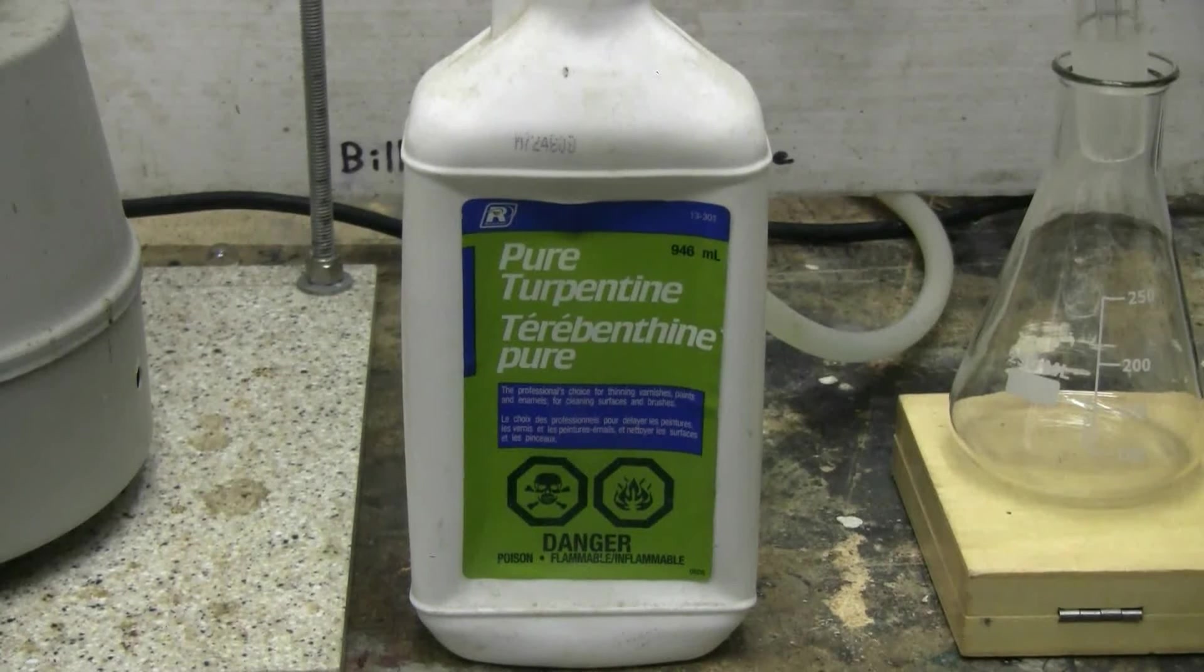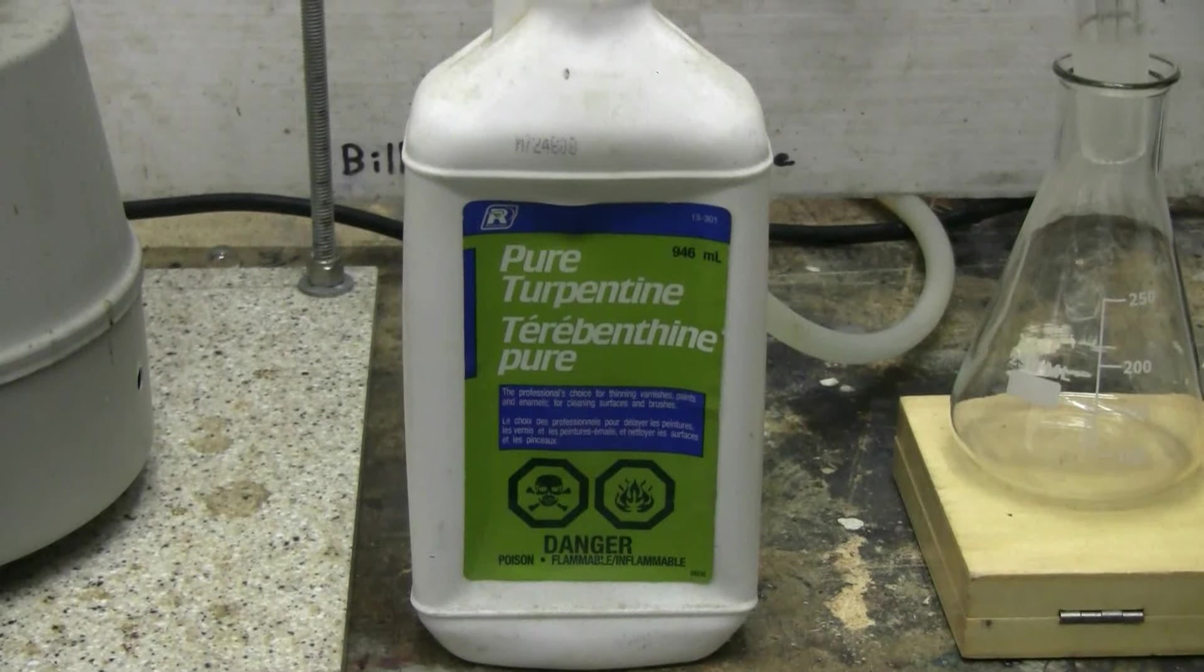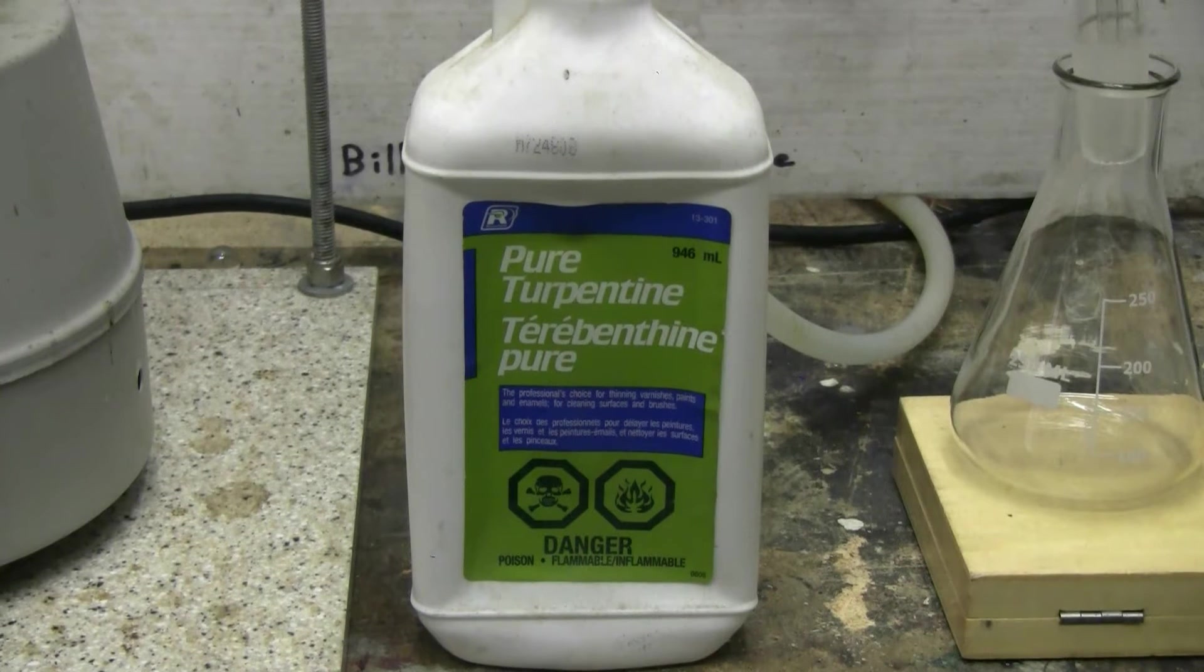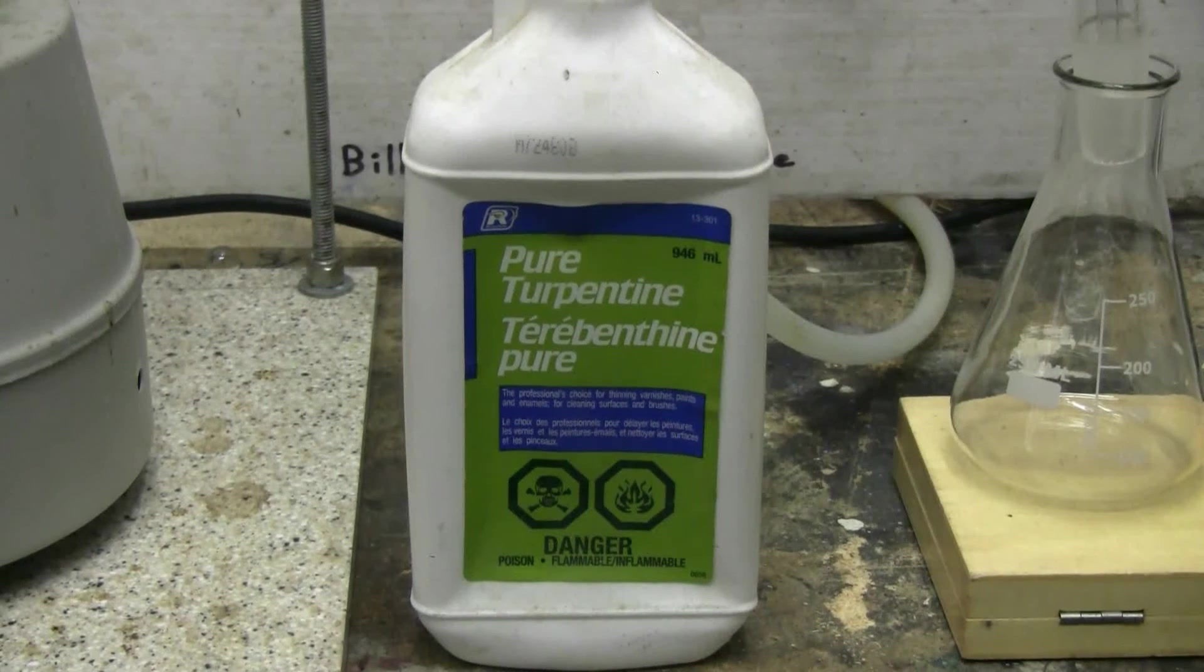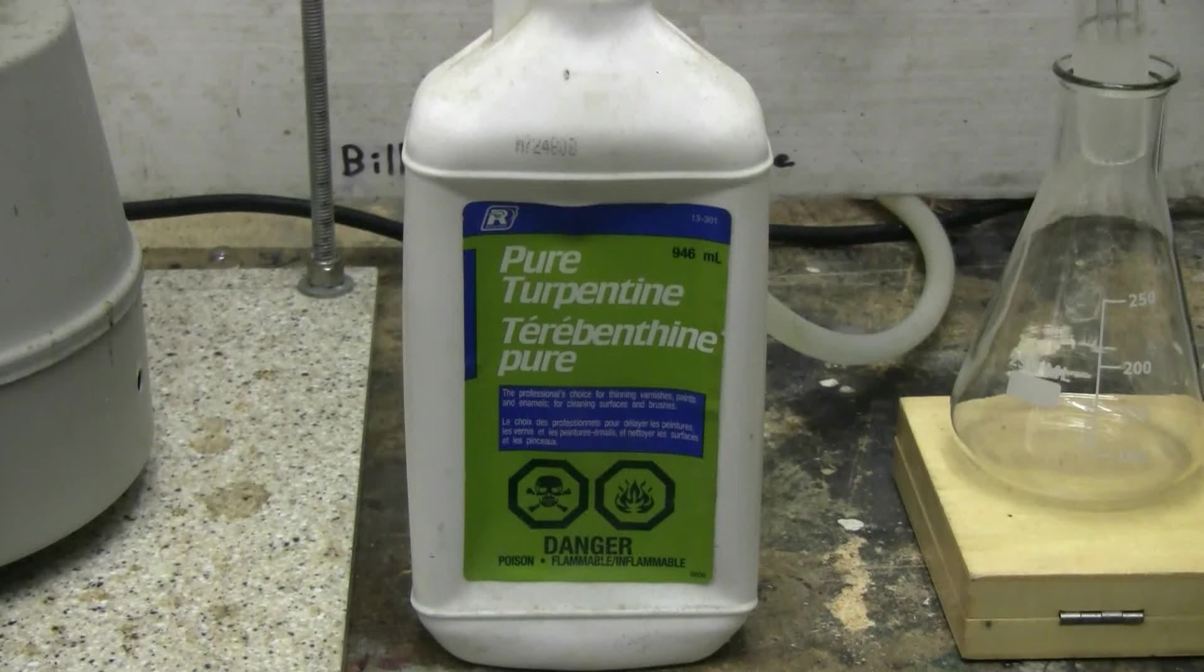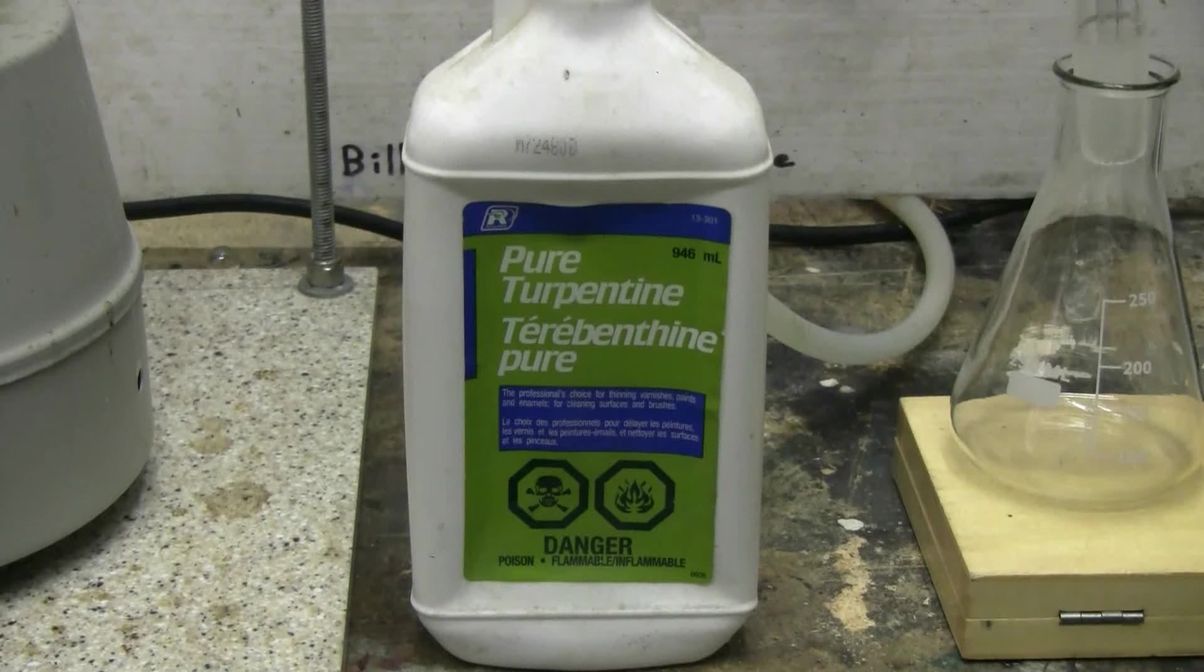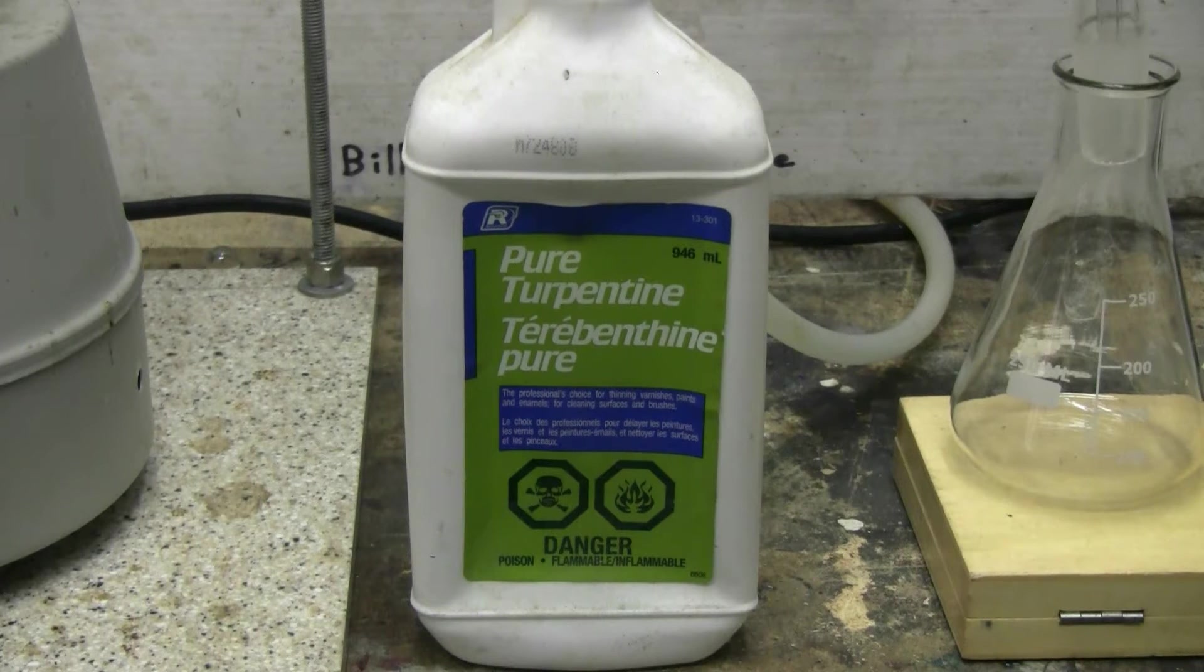Today I have some turpentine and I'm setting up for a simple distillation. Turpentine is mainly composed of alpha-pinene and beta-pinene. Alpha-pinene has a boiling point of around 155 Celsius, while beta-pinene has a boiling point of around 165-166 Celsius.